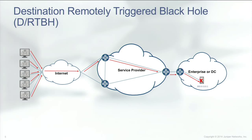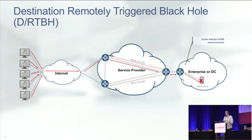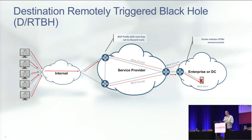So then we as an industry came up with this idea of remotely triggered black holes — destination remotely triggered black holes. The idea here is that the victim, once they're under attack, initiates a route back to their service provider telling them what address is being attacked and that they want that address basically null-routed in the service provider's network. They do that through sending a discard community that they've agreed to beforehand with their service provider. The service provider then takes that BGP prefix, sets the next hop to a discard route, and sends that traffic to the bit bucket.